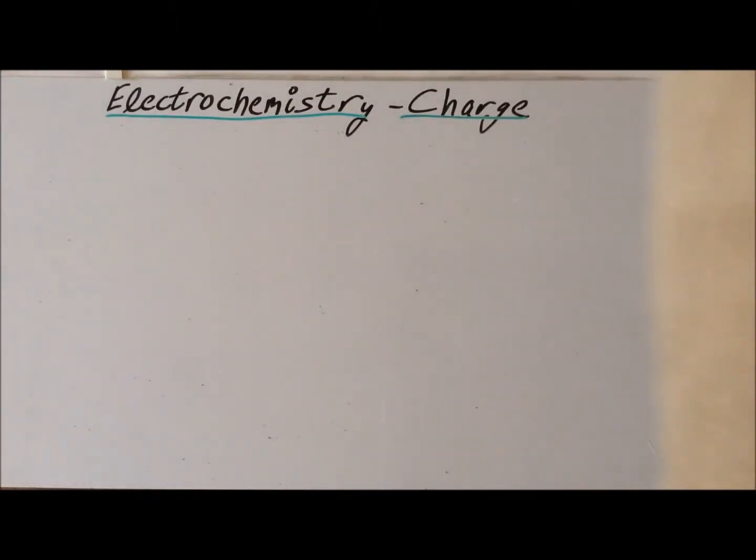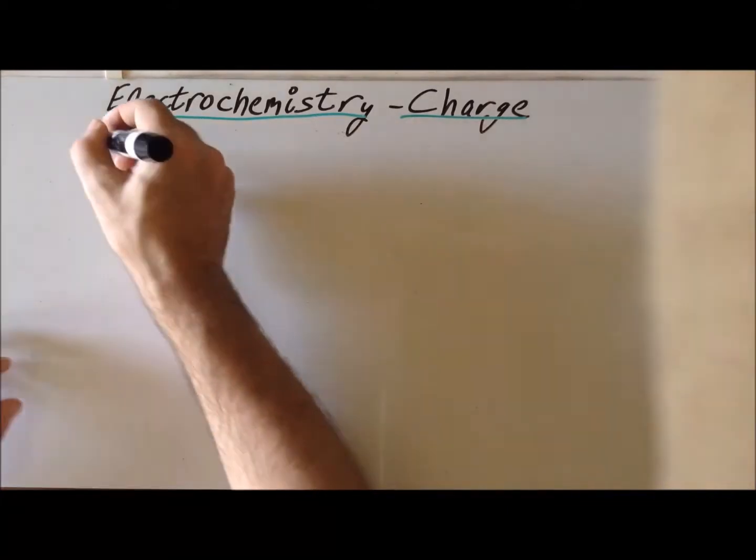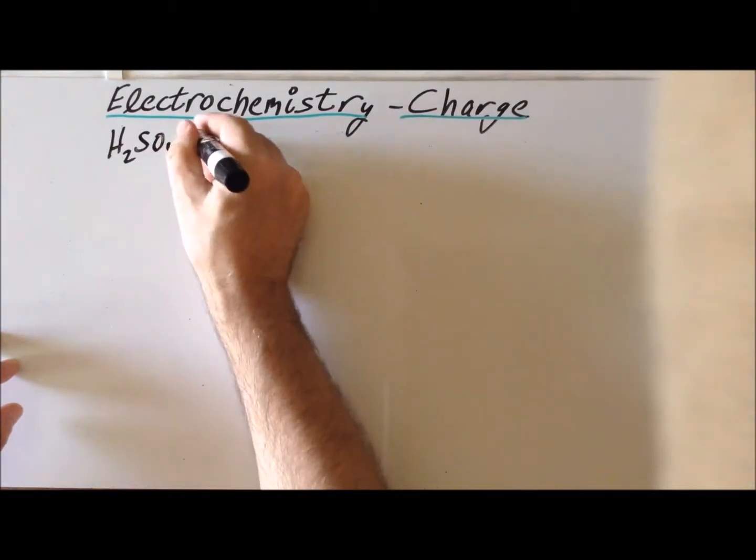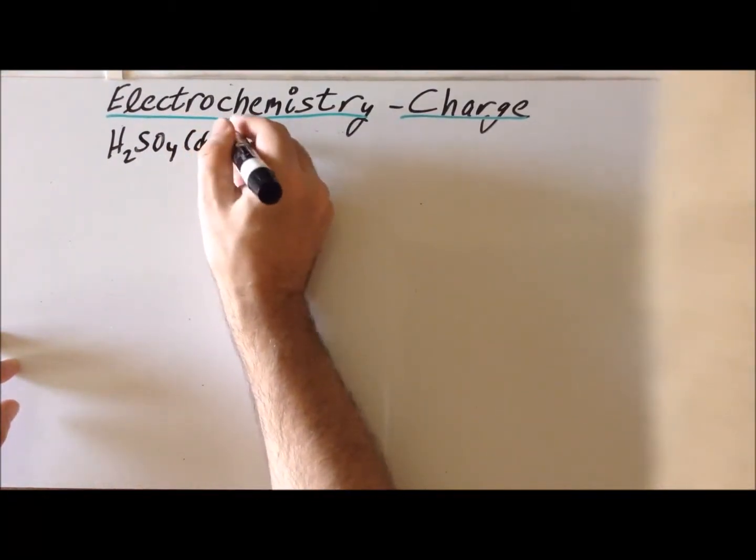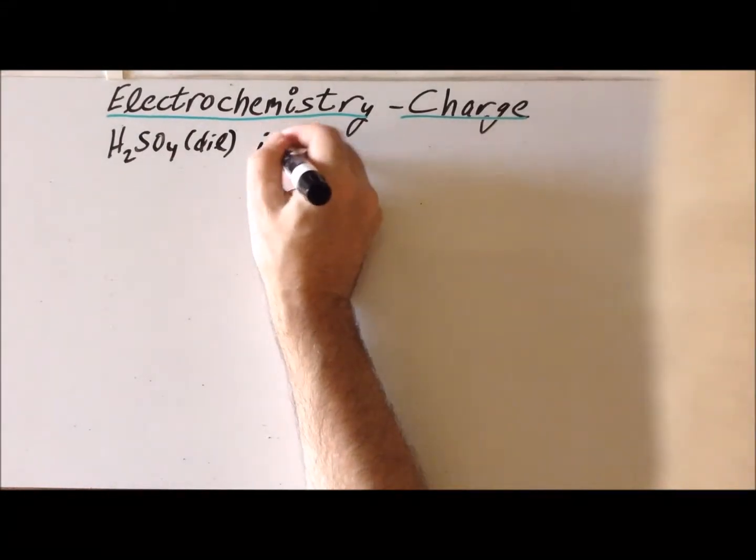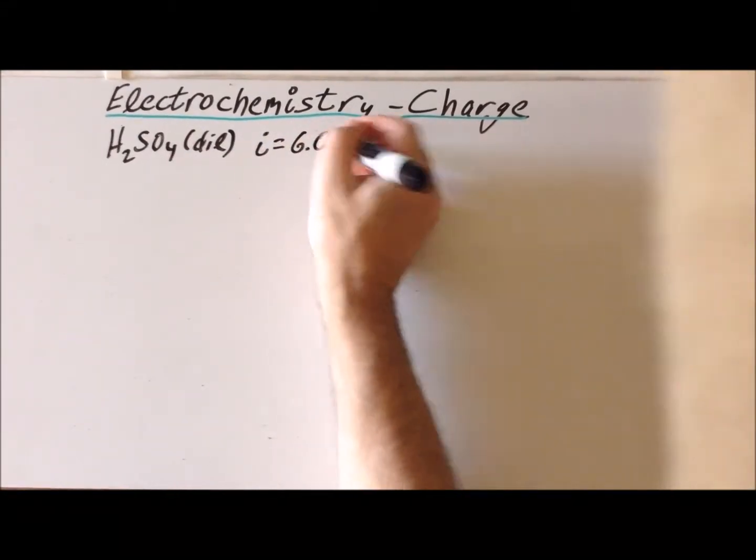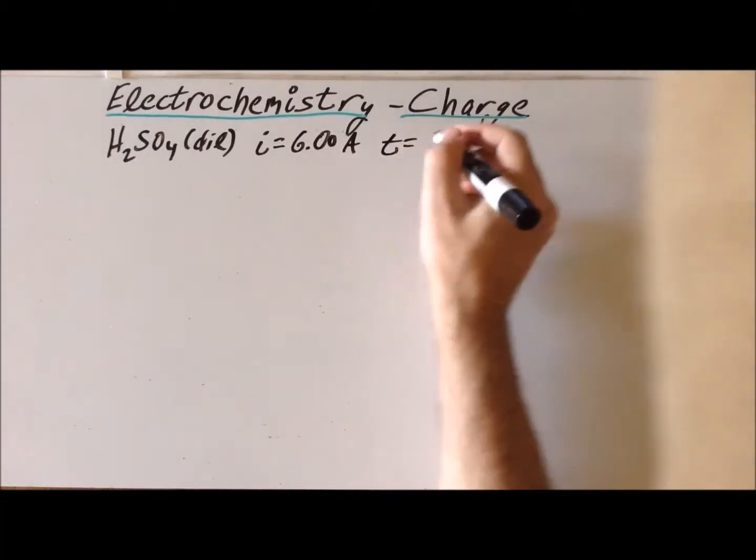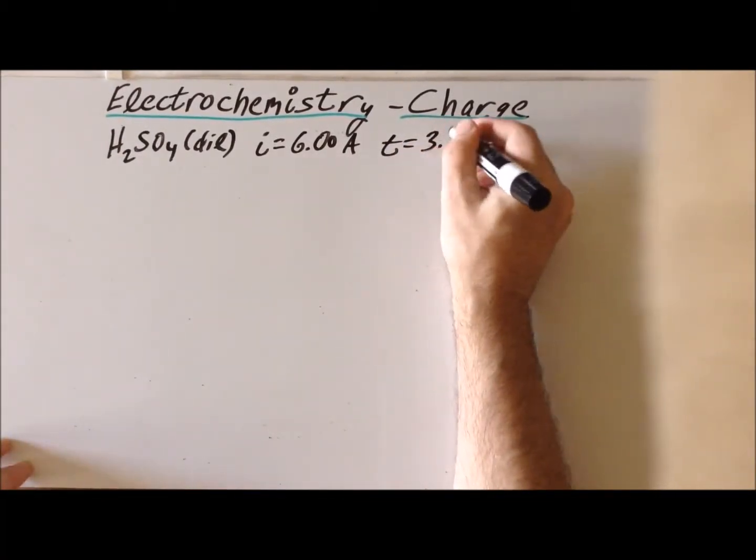In the electrolysis experiment, we run electric current through a dilute solution of sulfuric acid. The current is 6.00 amps and it runs for a time of 3.40 hours.